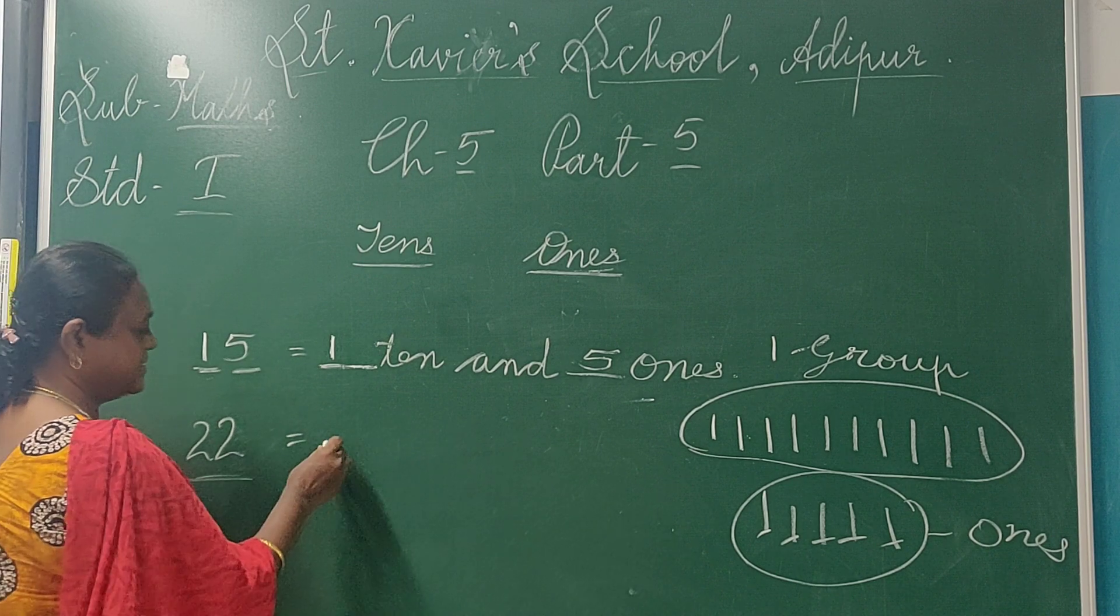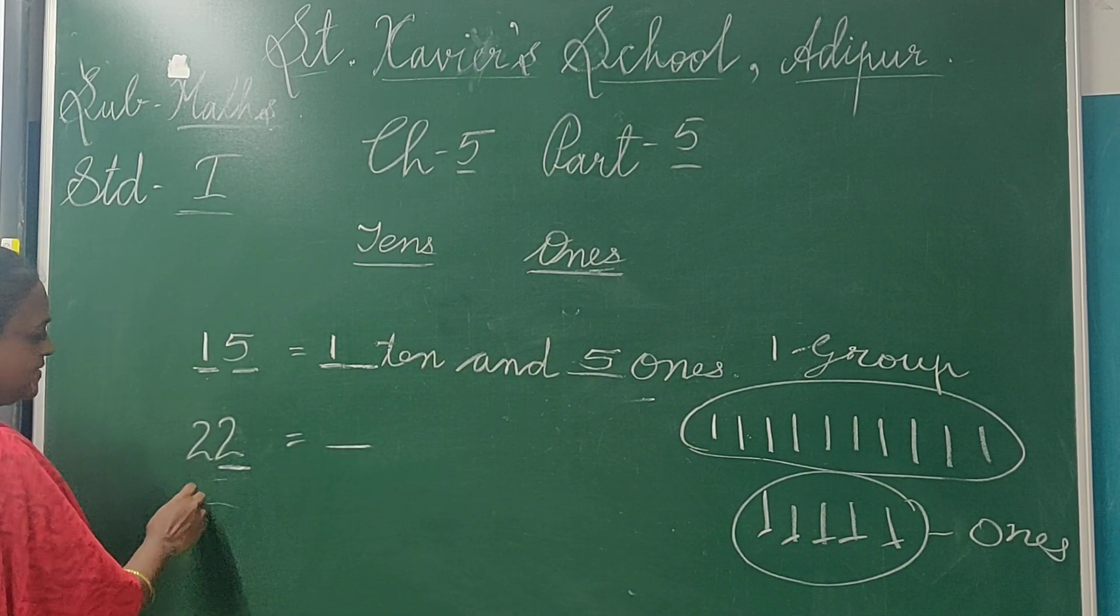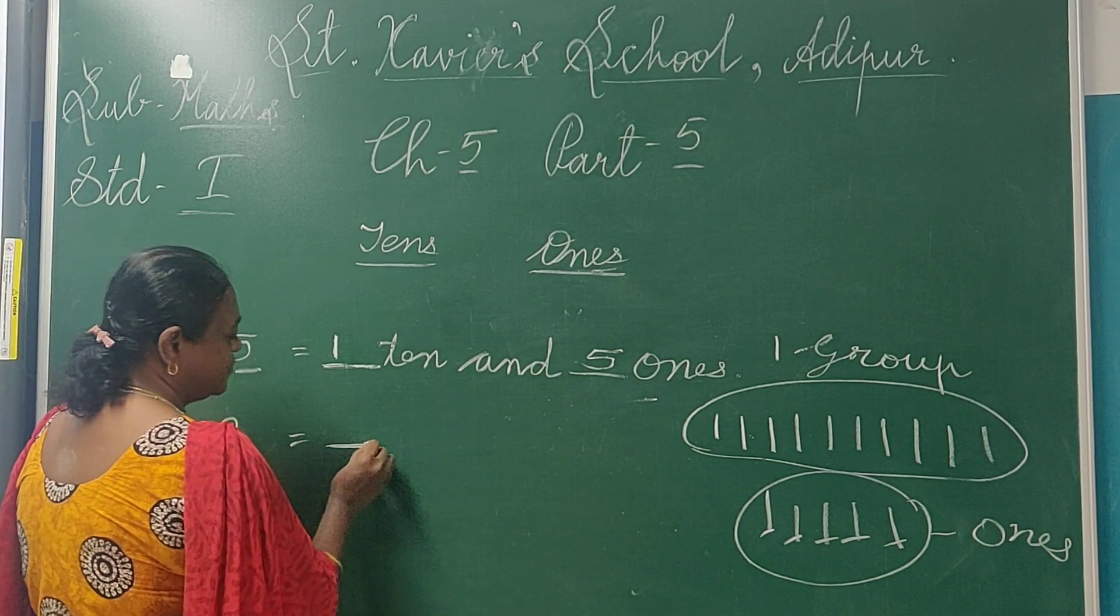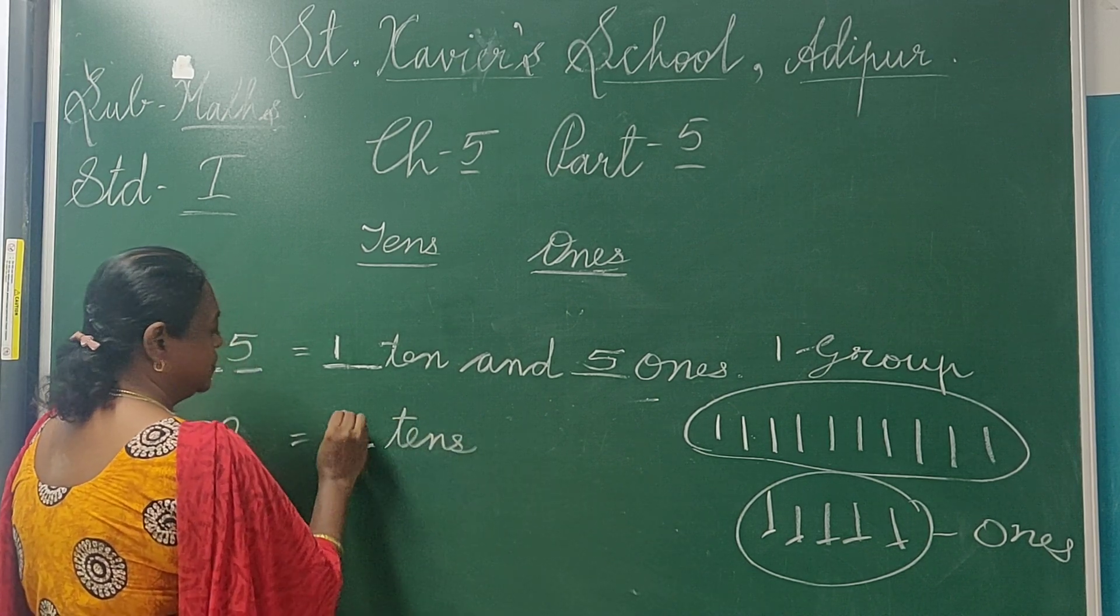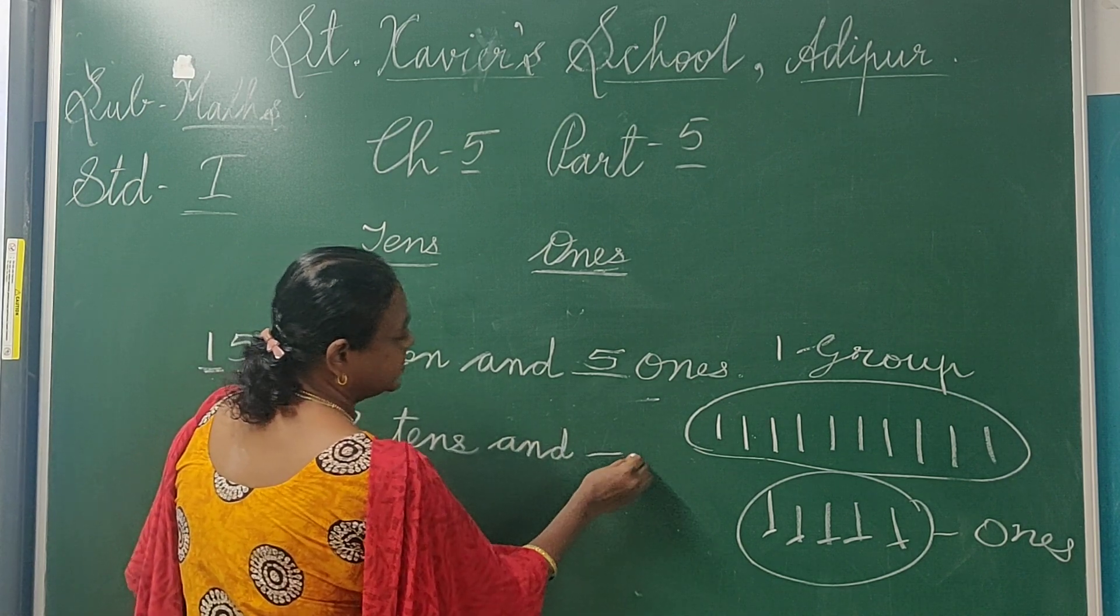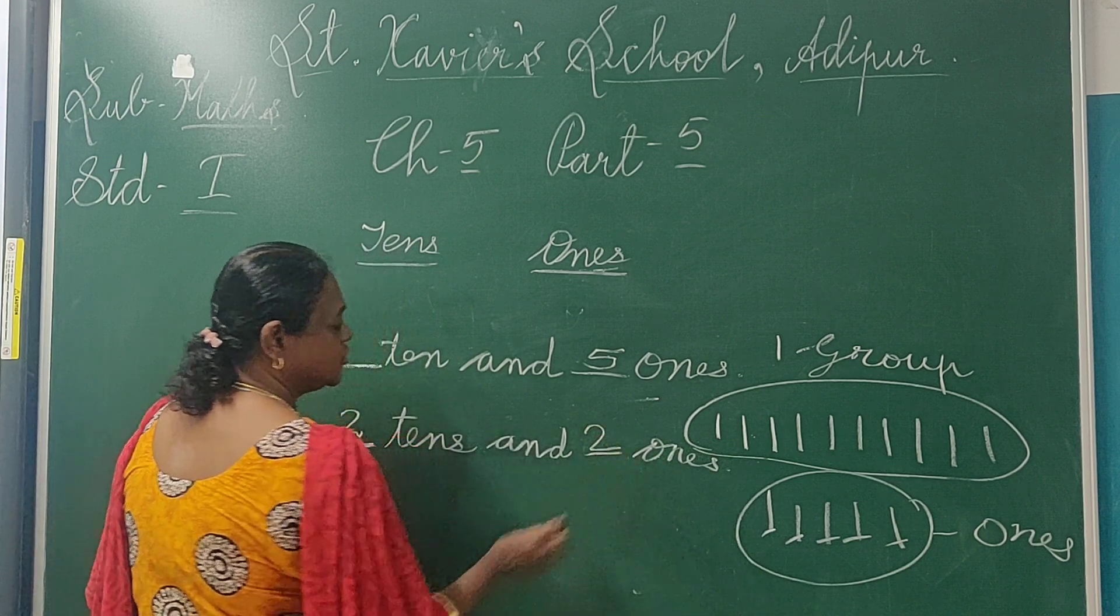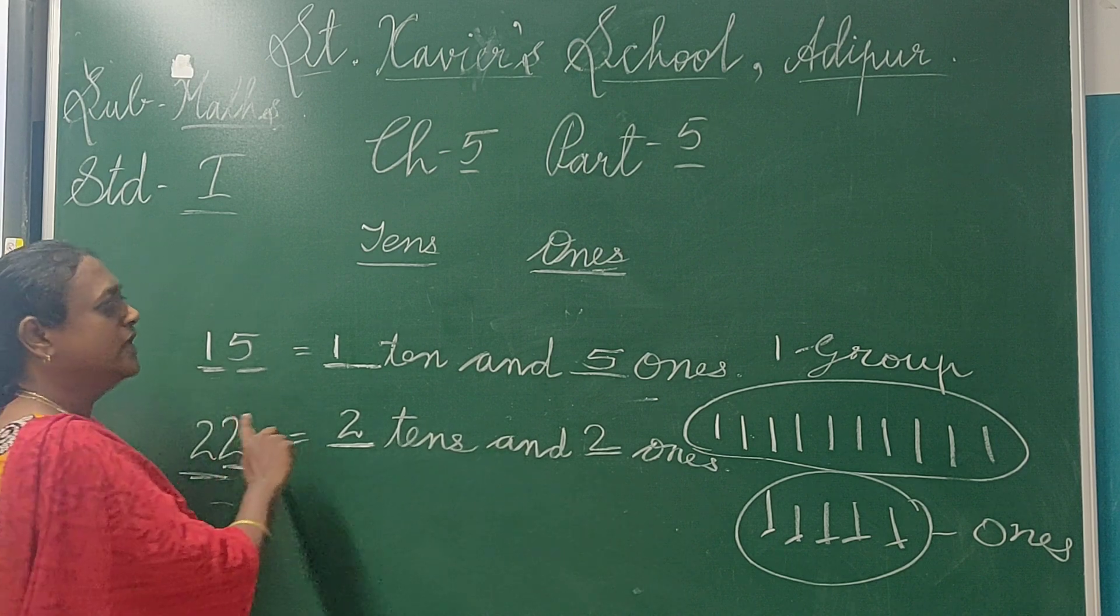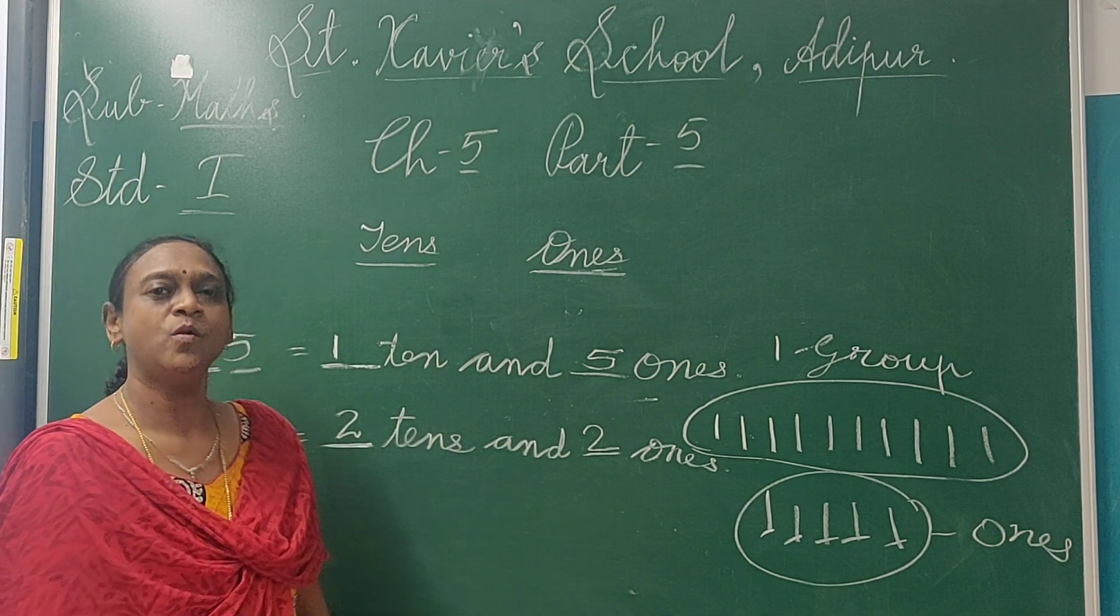Now again we will see how we will rank fill in the blanks. Right side is ones and left side is tens. Always remember.